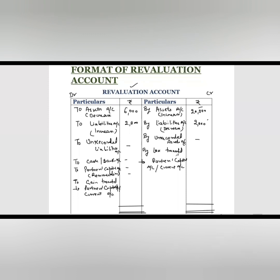So this is our complete revaluation account. If we have to pass journal entries, that is also very easy now. For credit side items, the revaluation account will be on the credit side of the journal entry. I hope this is clear to you and will prove useful. Thank you so much.